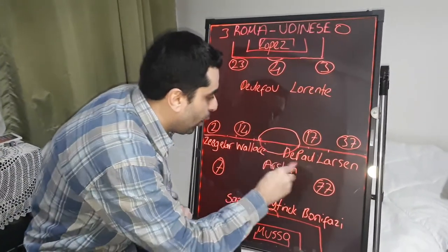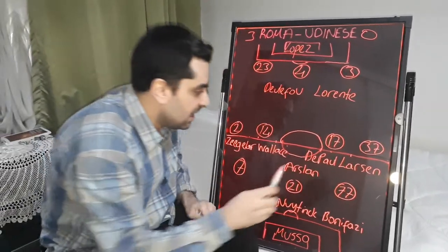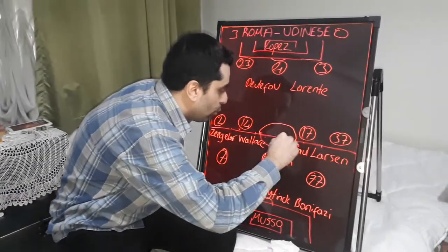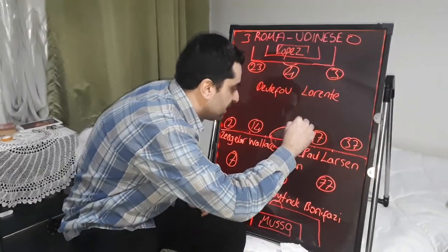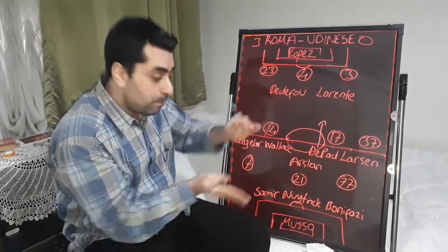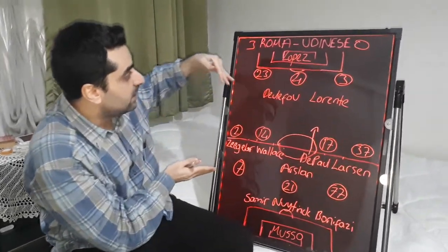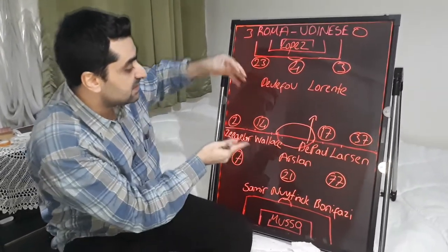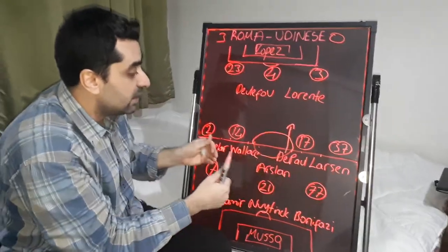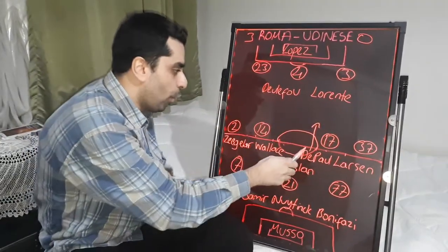Rodrigo De Paul is a real star for Udinese. He played more offensively, carried the ball forward, gave good passes through the Roma defense, and also delivered good long passes forward.